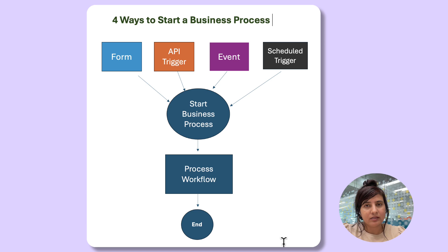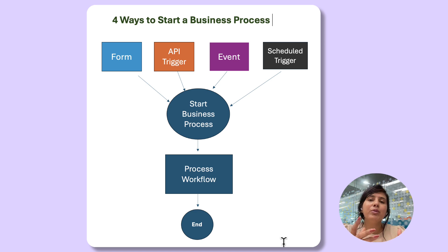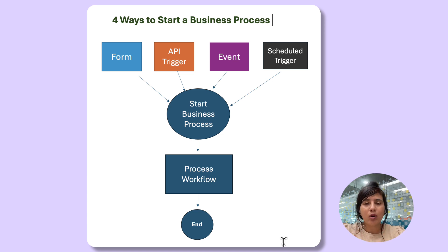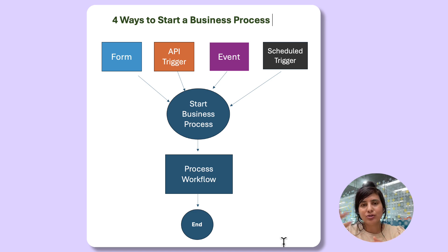Third is the event trigger. The event is generated from an external system. For instance, on the S/4HANA public cloud system, if a purchase order is created, then an event is generated. This event will be captured on the BTP system. On the BTP system, there is the Integration Suite service. Within the Integration Suite service, there is a component called Event Mesh. Event Mesh can be configured to capture the event happening on the S/4HANA public cloud system, and this event data is passed on to SAP Build Process Automation to trigger the process.